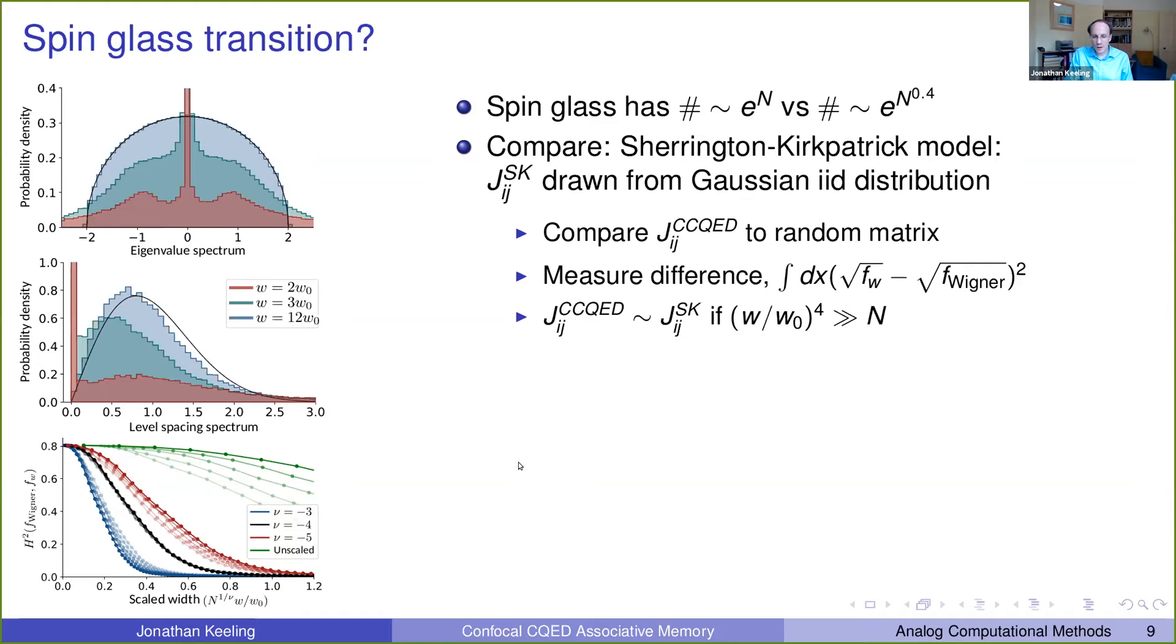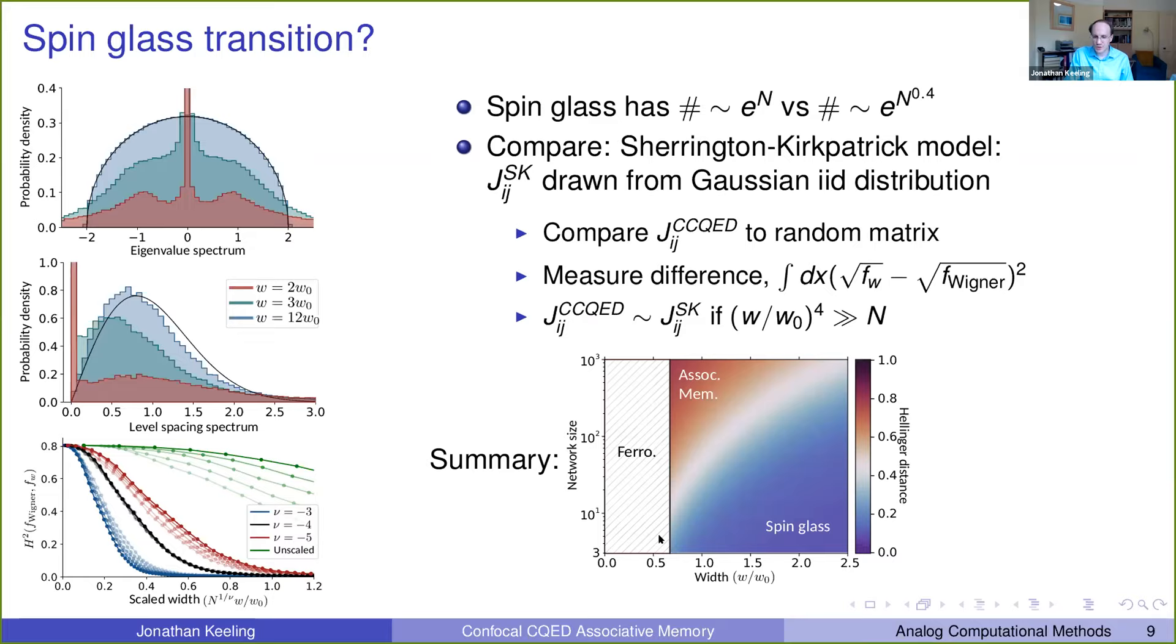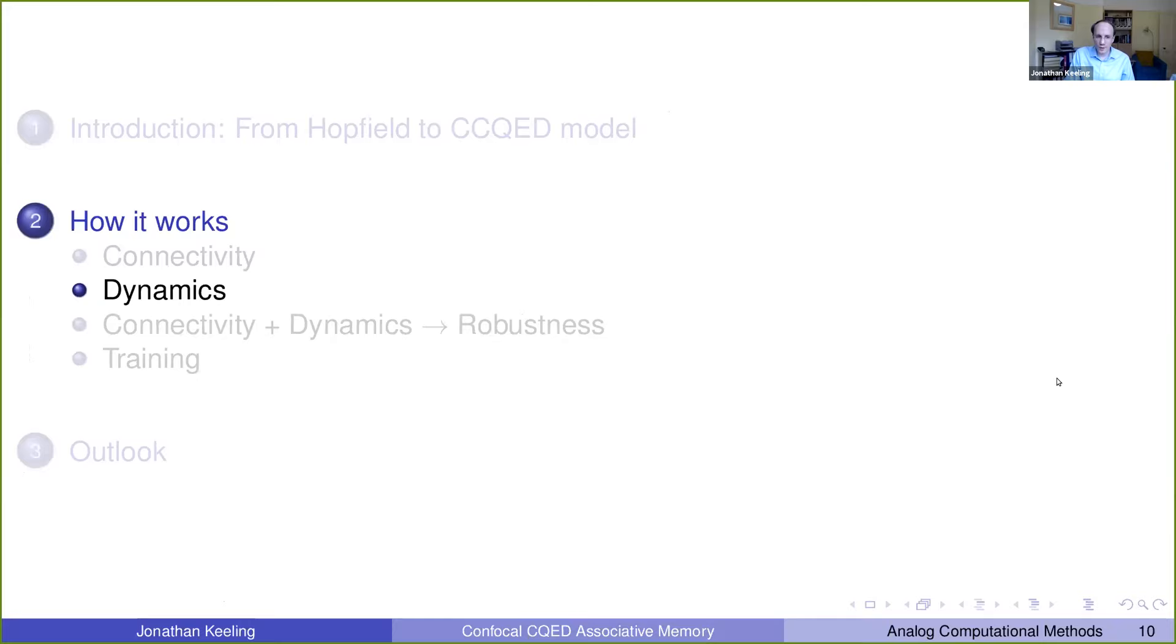And there are N or order N squared matrix elements, and you need to know how uncorrelated they are. And this determines when you get this transition to something which looks like a random matrix. I should note, it may be a spin glass before it becomes a random matrix. But what we can prove is it is a spin glass in that limit, because we know it's a random matrix. So if I put everything I've said about connectivity together, you get this kind of phase diagram, which says for small widths, we definitely have a ferromagnet, and that doesn't really care about the system size. And whereas for larger widths, we care about system size. And then there is a transition between a spin glass and associated memory, which is dependent on the system size from this result noted above.